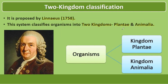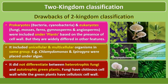Then came the two-kingdom classification, proposed by Linnaeus in 1758. This system classifies organisms into two kingdoms: Plantae and Animalia. There are drawbacks to this two-kingdom classification, which is why we no longer follow it.